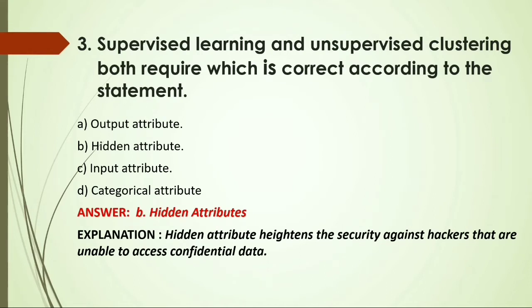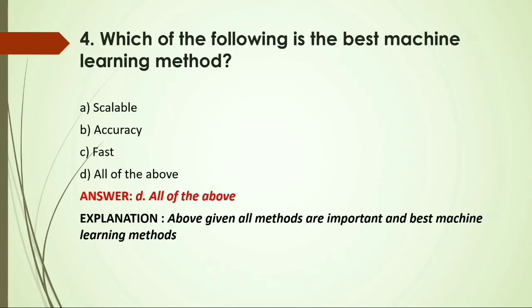MCQ: Which of the following is the best machine learning method? Options: A) Scalable; B) Accuracy; C) Fast; D) All of the above. Answer: D, all of the above, because all these methods are important and represent the best machine learning methods.